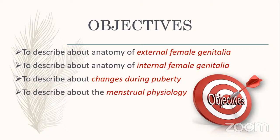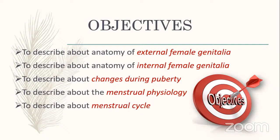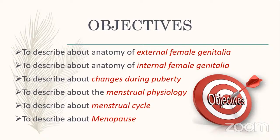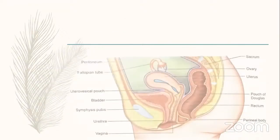We will cover what changes occur in puberty and why, then describe the menstrual cycle and its physiological changes. Finally, we will describe menopause. I have highlighted key points in red — those are possible exam questions for AAPGT or other competitive exams. Please note those down.